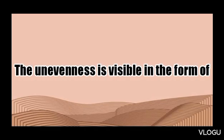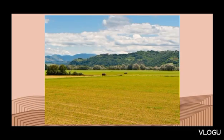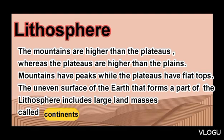The unevenness is visible in the form of mountains, valleys, plateaus and plains. The mountains are higher than plateaus, whereas the plateaus are higher than the plains. Mountains have peaks while plateaus have flat tops. The uneven surface of the Earth that forms part of the lithosphere includes large landmasses called continents.